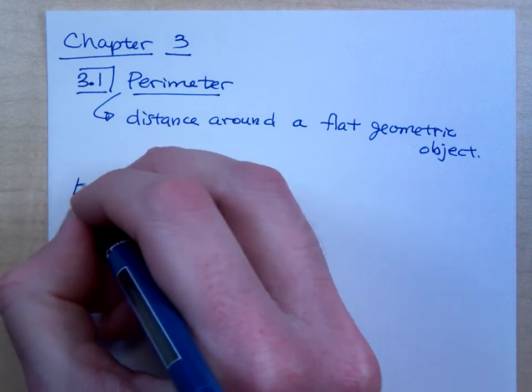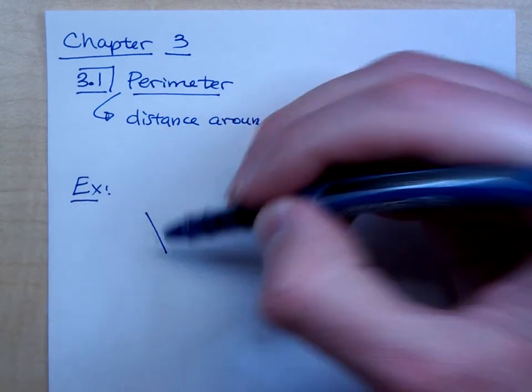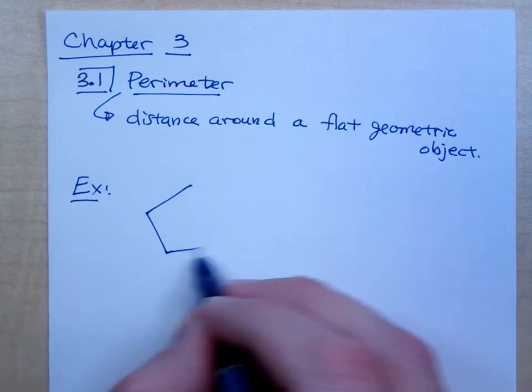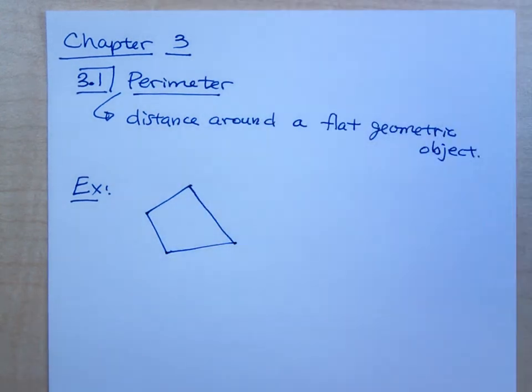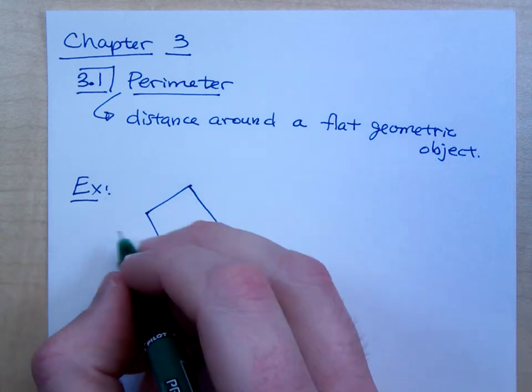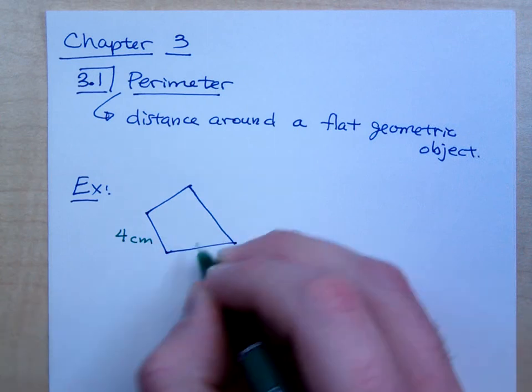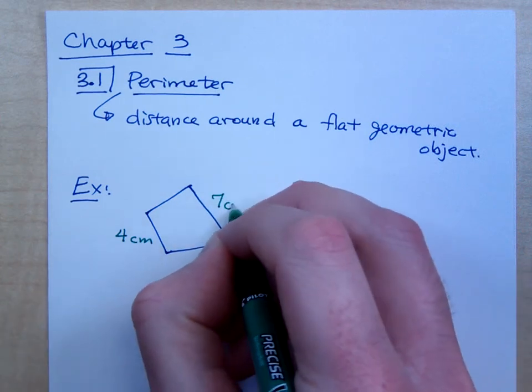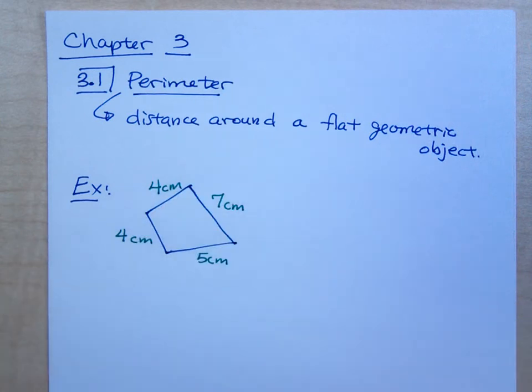So if I have something like this, for example. This guy has no real special shape. It would be called a quadrilateral because there are four sides to it. And if I give you the side lengths like this, this is four centimeters, this is five, here's seven, and that's four. If I ask you for the perimeter, a lot of times we denote that with a capital P. How would you find the perimeter of this? If I said it's the distance around, what do you do?